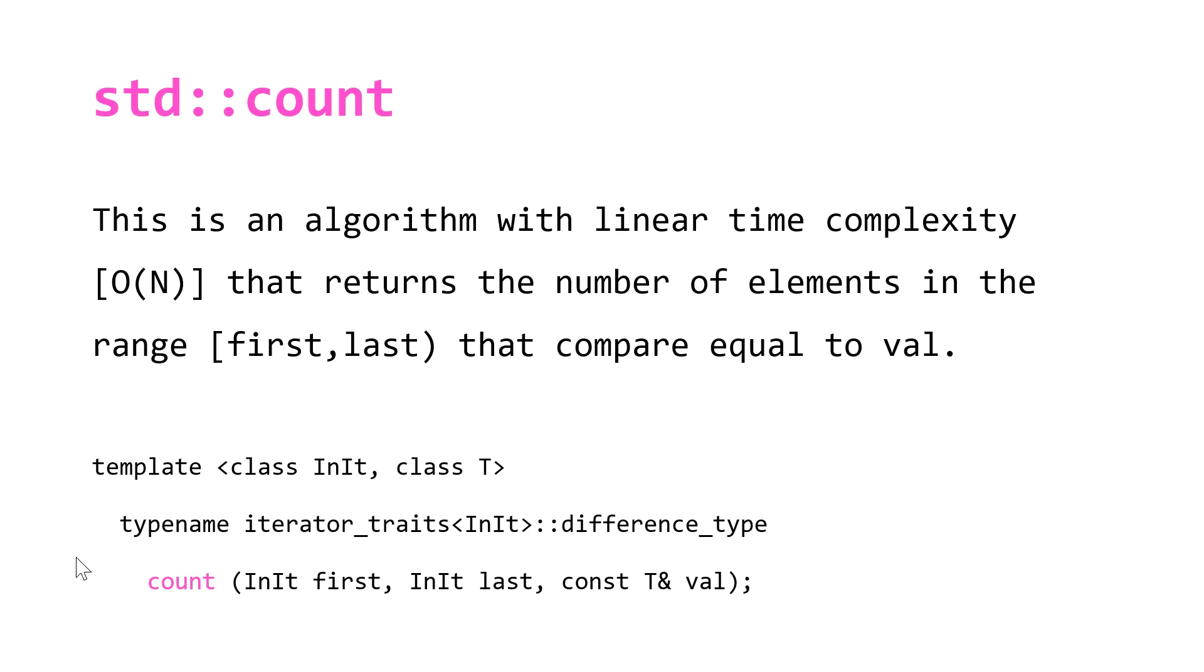The second line here declares the type of the output of our algorithm count. You can see here we take two iterators first and last which define the range which our algorithm is operating over and the value that we are searching for.